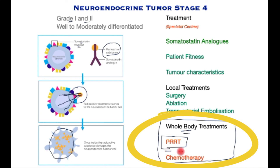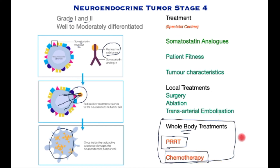Patients are also candidates for chemotherapy, which is a field expanding rapidly with new treatments and drugs being added to the armamentarium on a regular basis. This completes a brief overview of the treatment of neuroendocrine stage 4 disease. Please review other videos in the neuroendocrine tumor playlist and share any comments.